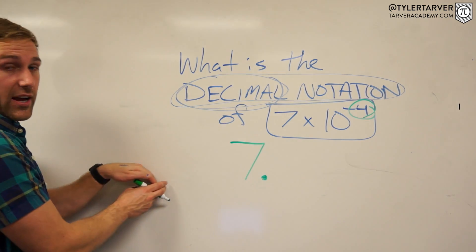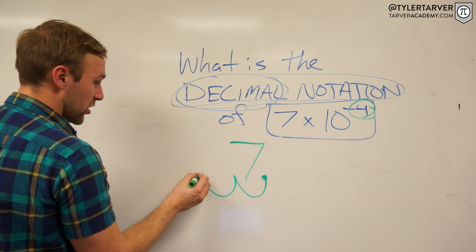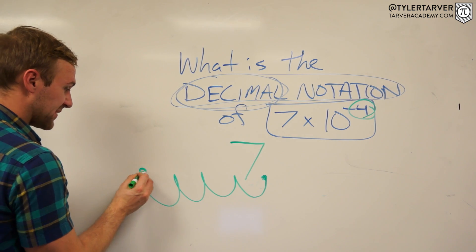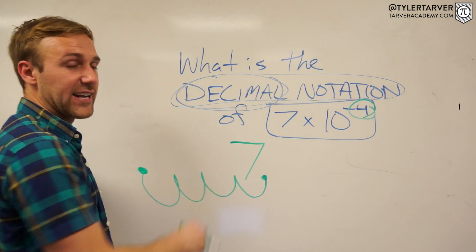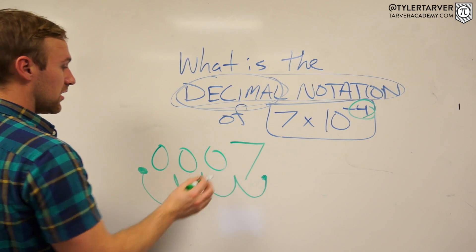Okay, so four. We're gonna make it smaller. The way to make it smaller would be to move the decimal this way. So move it four spots: one, two, three, four. My decimal is now right here. Now I can't have blank spots, can I? No. So put zeros in there. So we've got point zero zero zero seven.